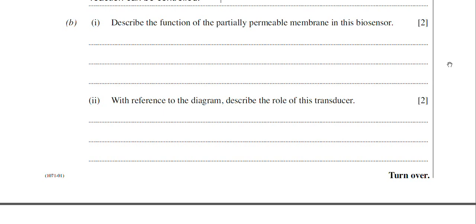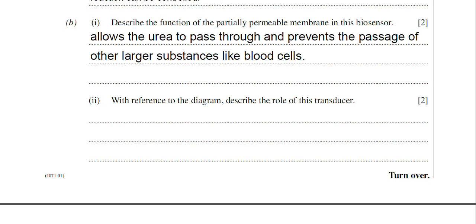The other mark then is to state that any other molecules, substances that are present in the blood or the urine are prevented from entering into the biosensor. So it very much just allows small molecules in, in particular, the molecule that wants to be detected. So I've tried that answer in now. It just allows the urea to pass through and prevents the passage of other larger substances like blood cells. So always remember to quote those two facts there.